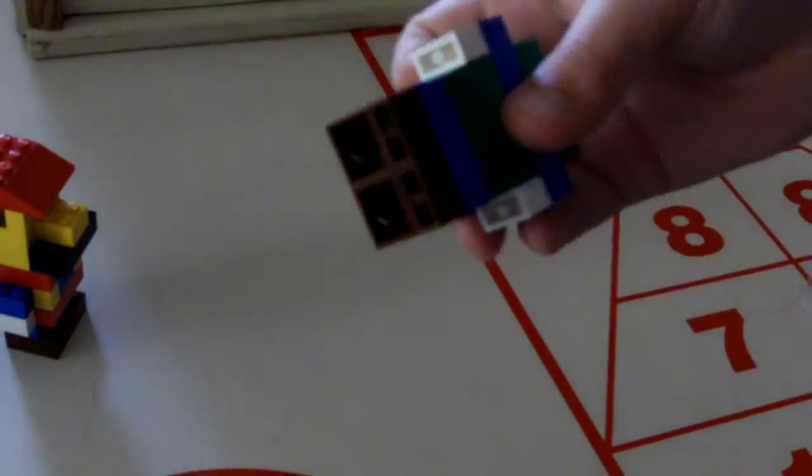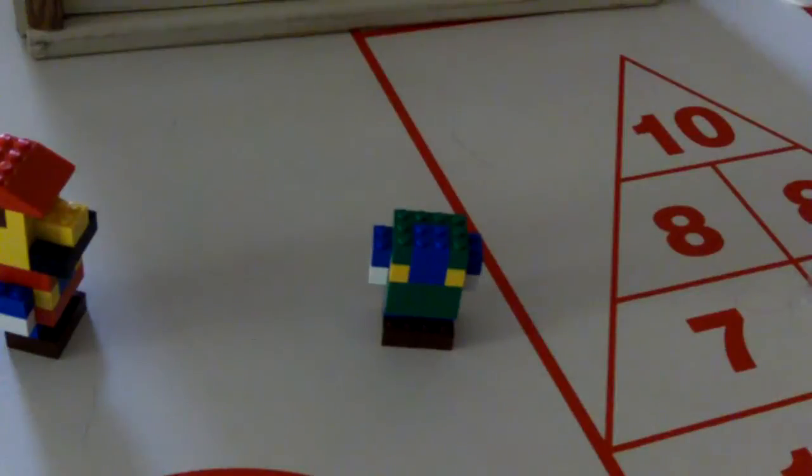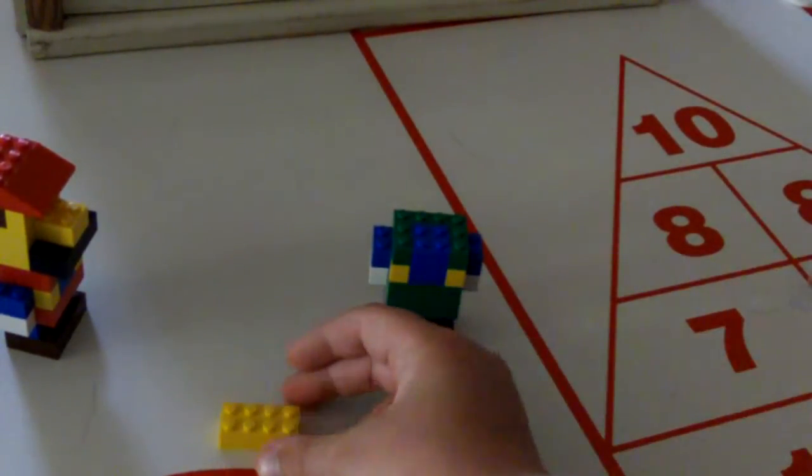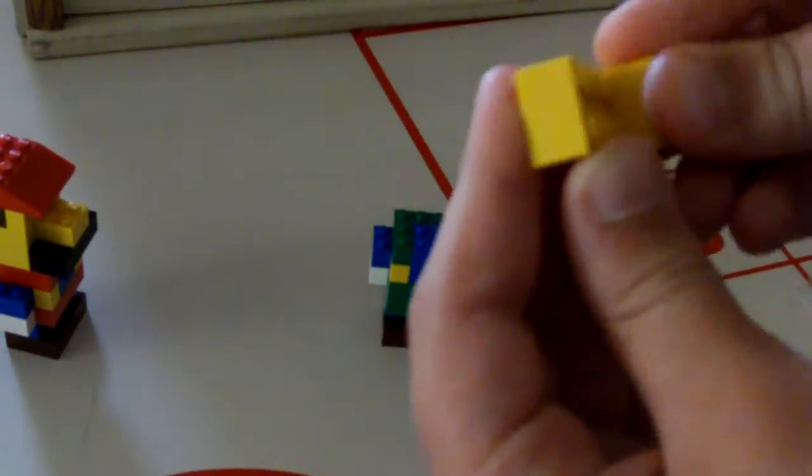Oh, and if you don't have brown for the feet or for the hair, use black. But I was fortunate enough to have brown. Okay, then you're going to want a yellow 2x4. I'll stick a yellow brick there.